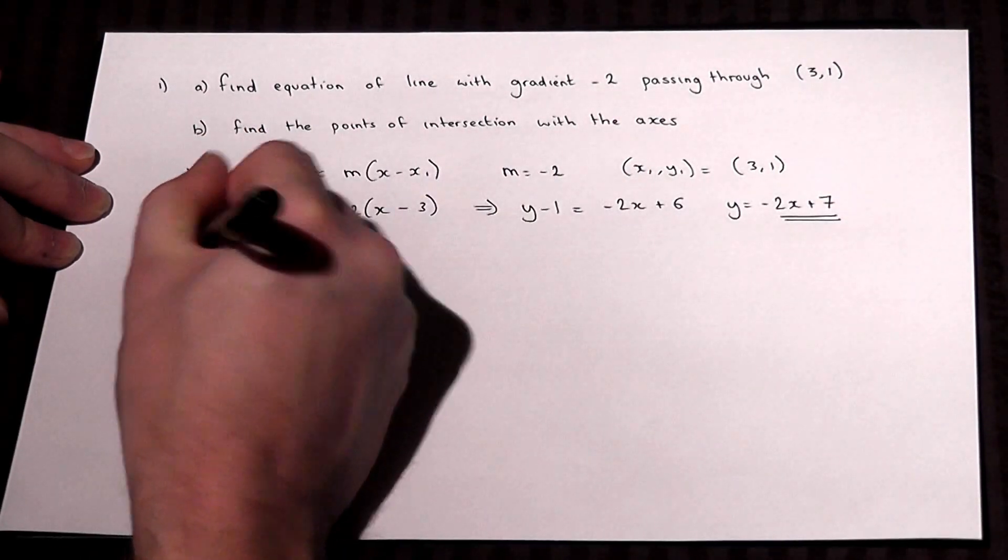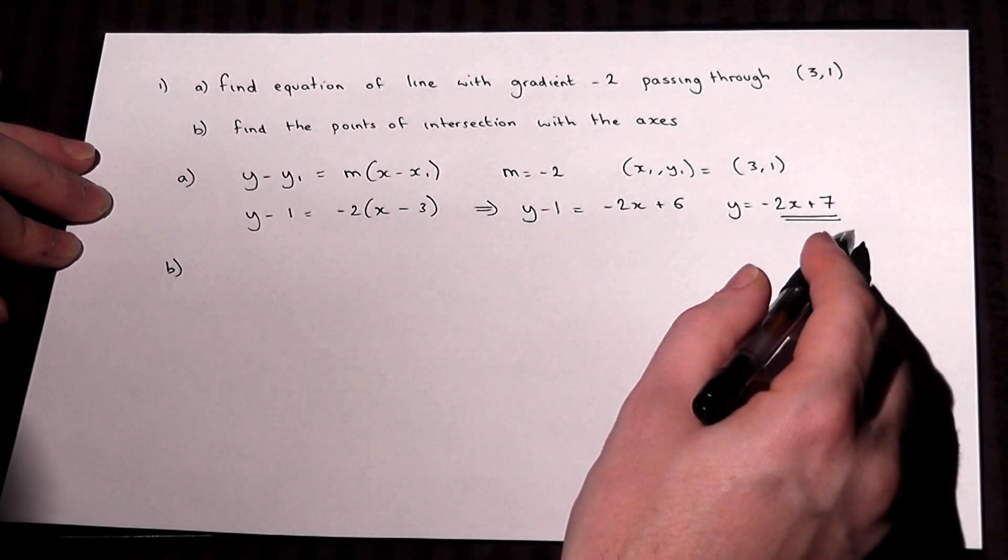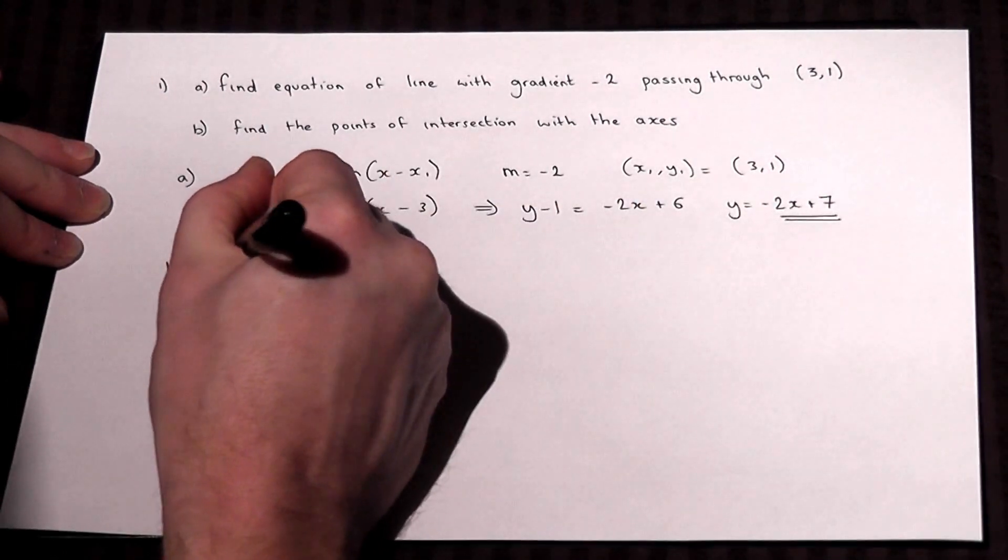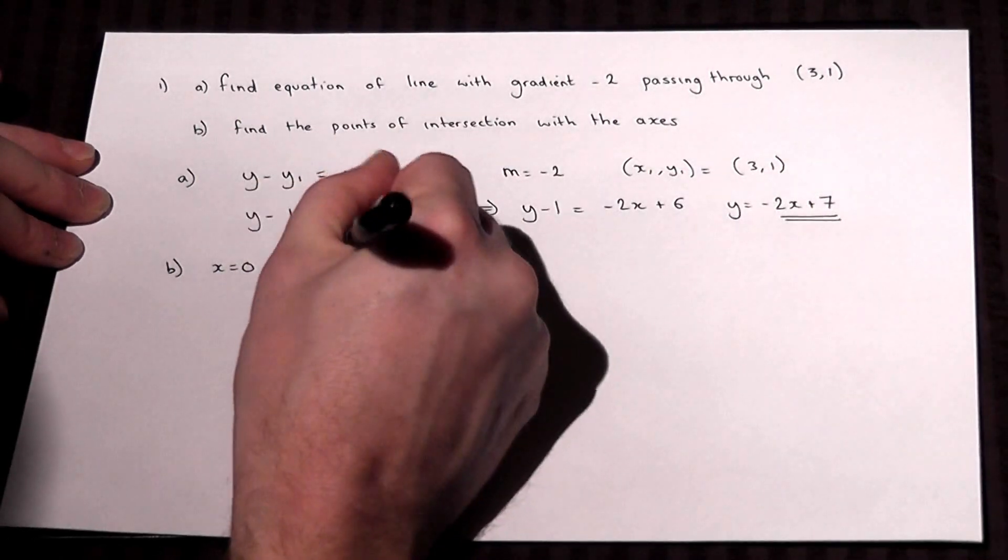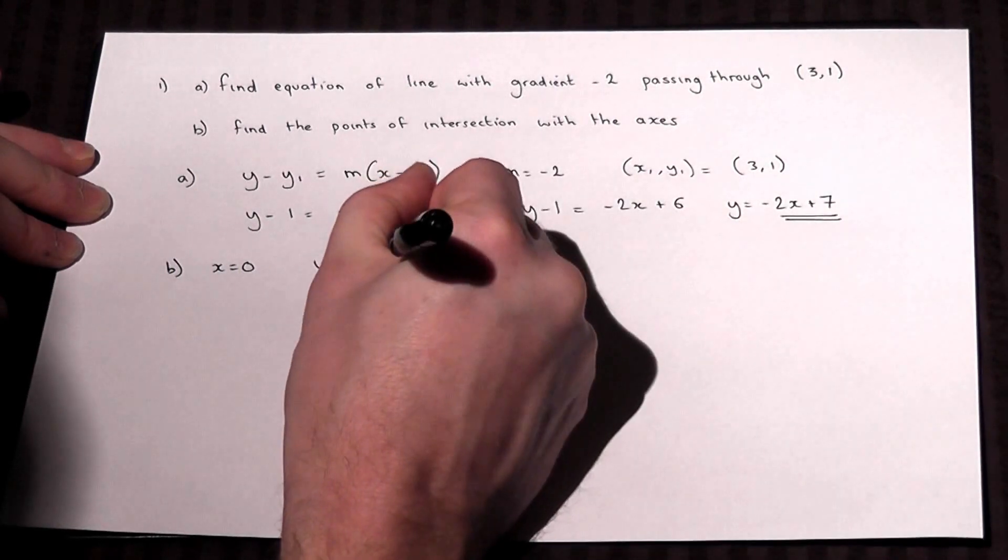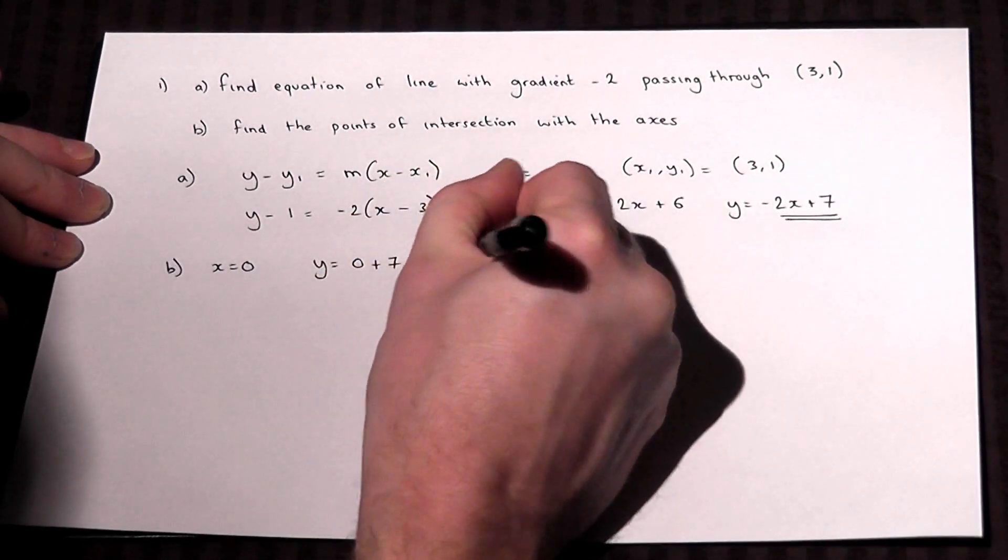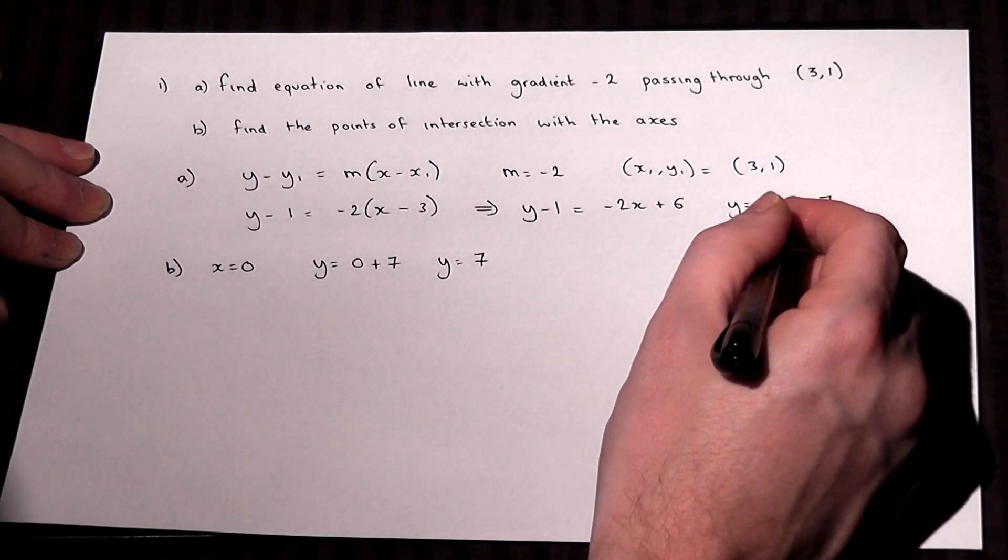Now, part B asks where this line intersects with the axes. The y-axis is where x equals 0. So when x equals 0, y will equal minus 2 times 0, which is 0, plus 7. So y will equal 7. So the line hits the y-axis when y equals 7.